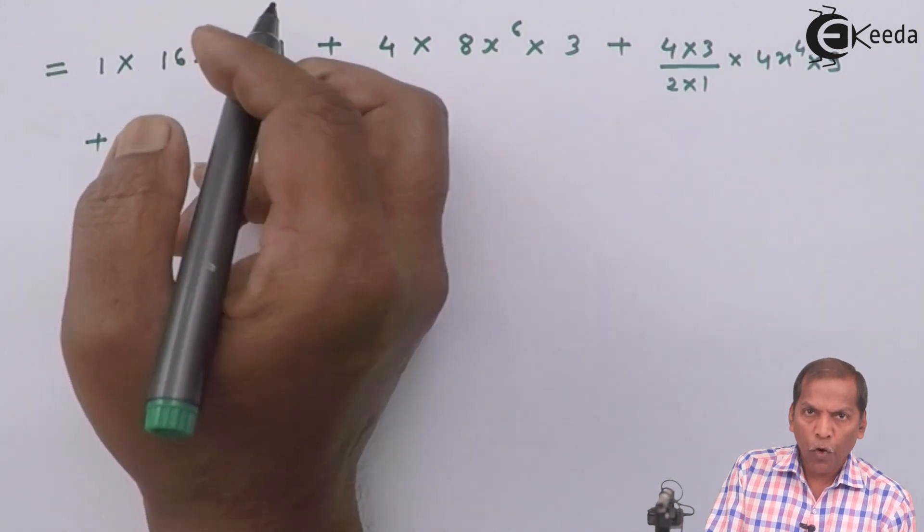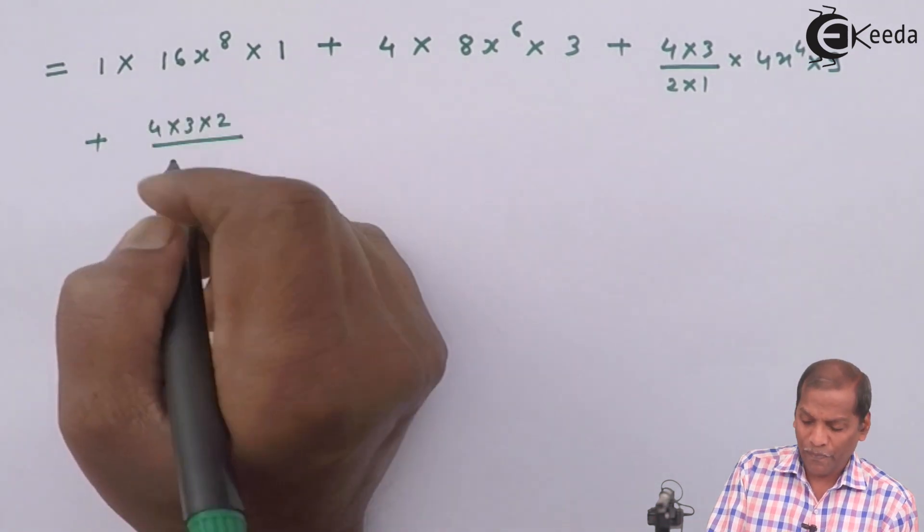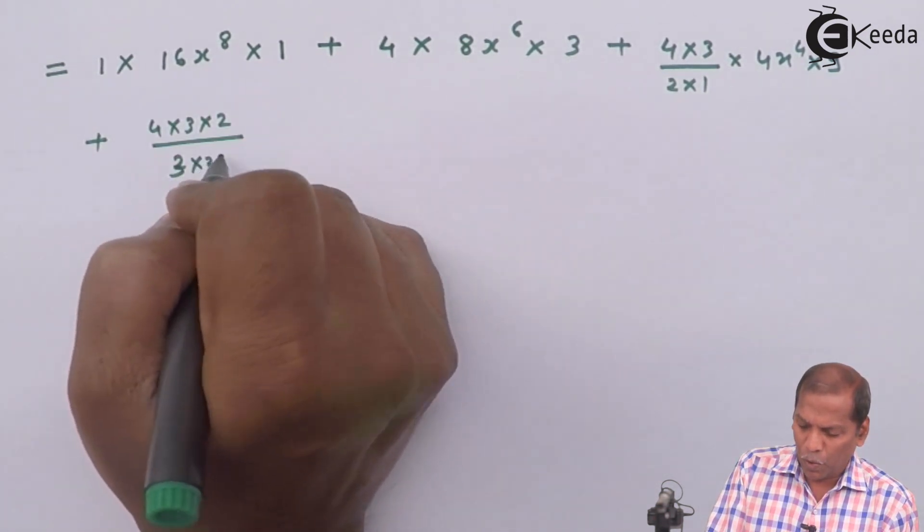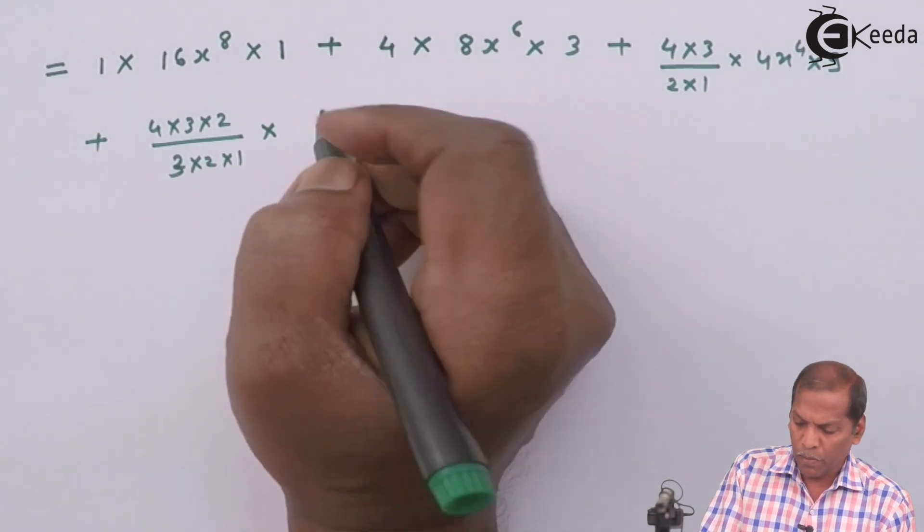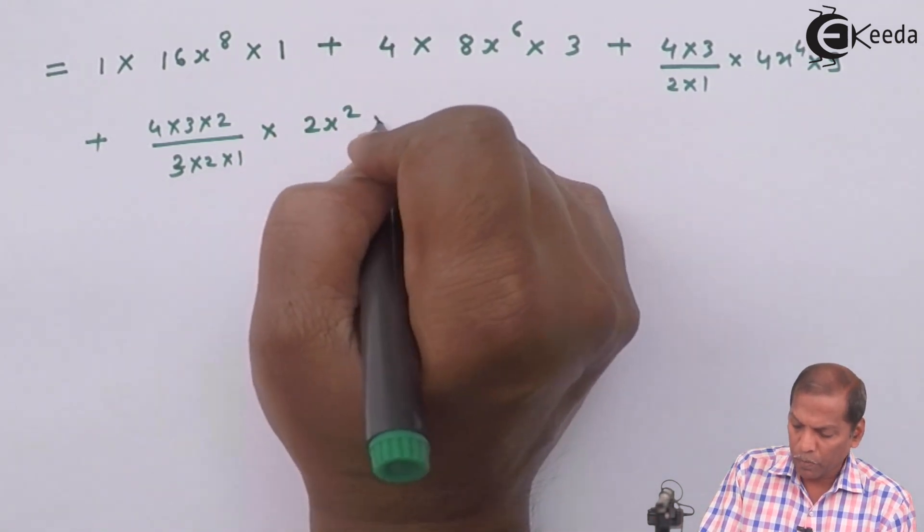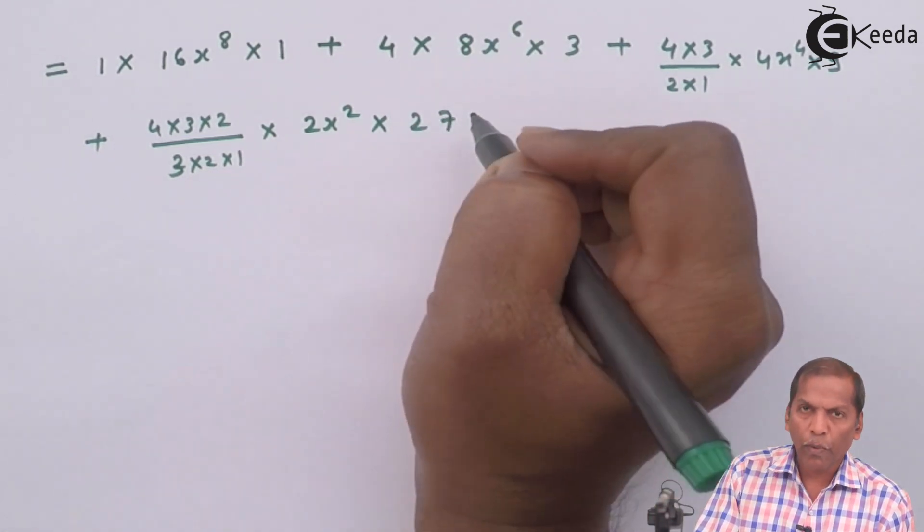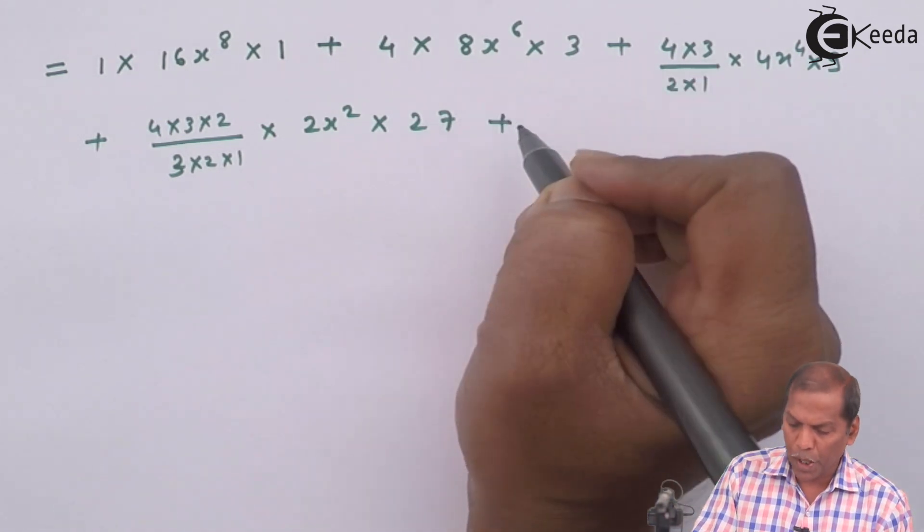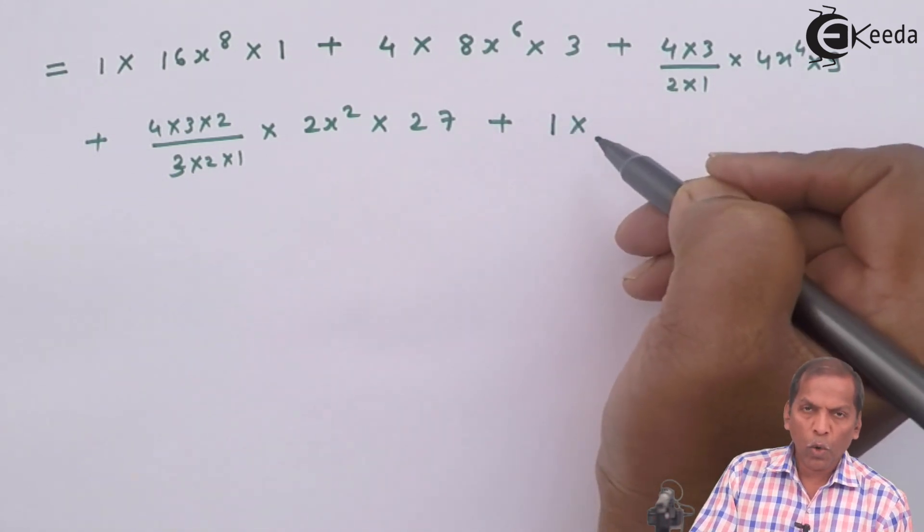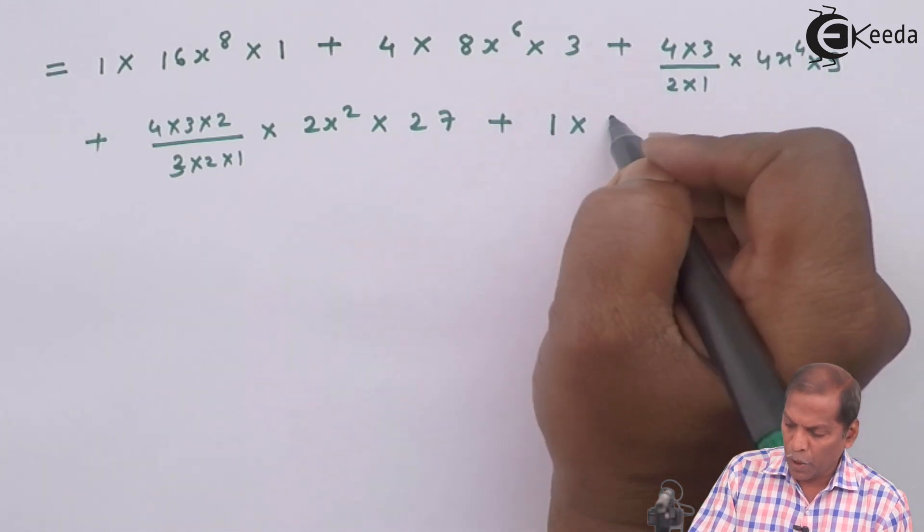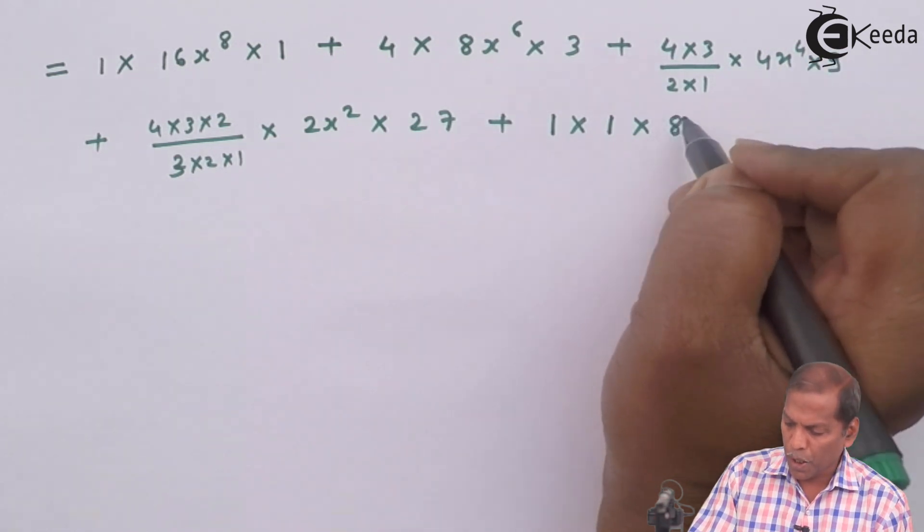plus now ⁴C₃ that is 4×3×2/(3×2×1) times (2x²)¹ so that gives 2x² times 3³ that gives 27, plus ⁴C₄(2x²)⁰ that gives 1 times 3⁴ so that gives us 81.